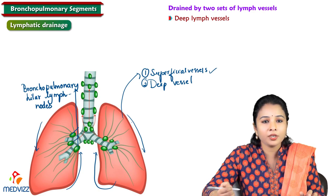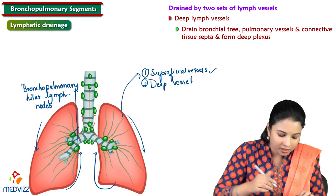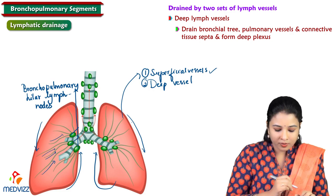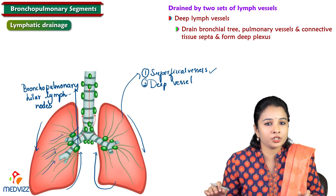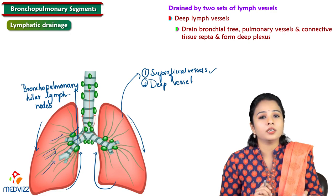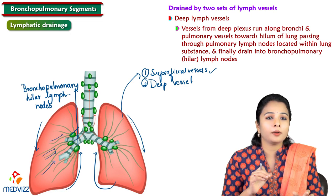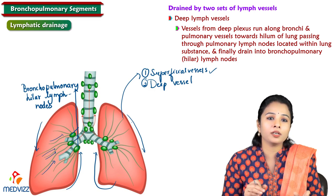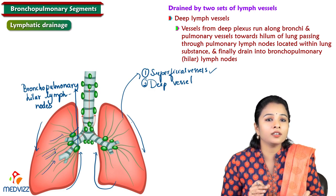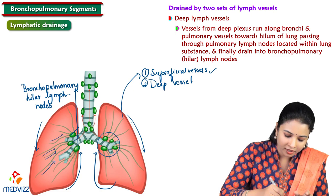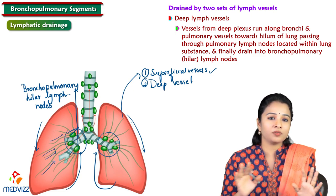The deep lymph vessels drain the bronchial tree, running along the bronchi and pulmonary vessels through connective tissue septa, forming the deep plexus. These vessels run toward the hilum, passing through pulmonary lymph nodes within the lung substance, and finally drain into bronchopulmonary or hilar lymph nodes — just like the superficial lymphatics.